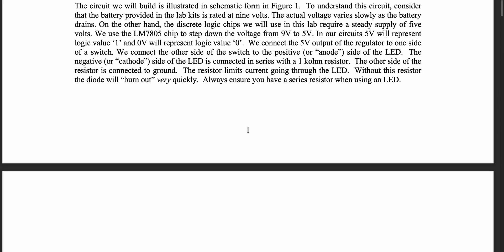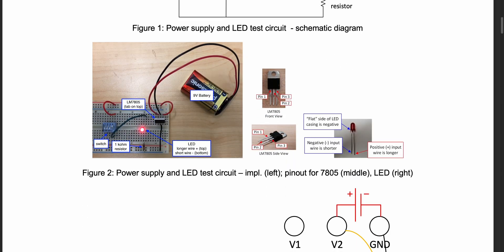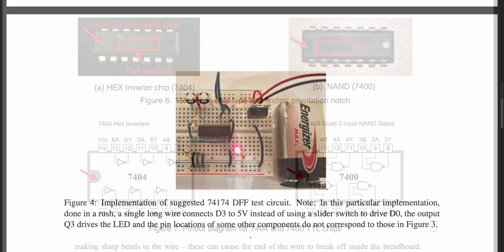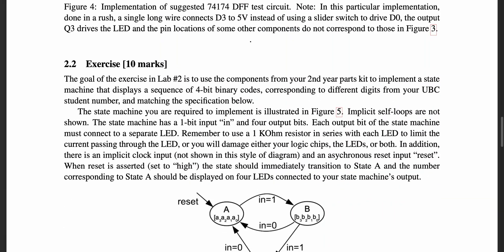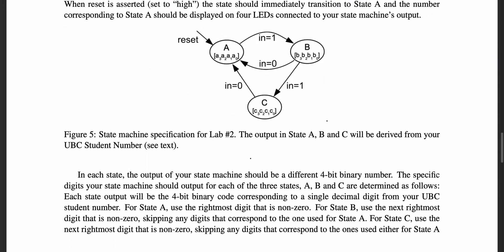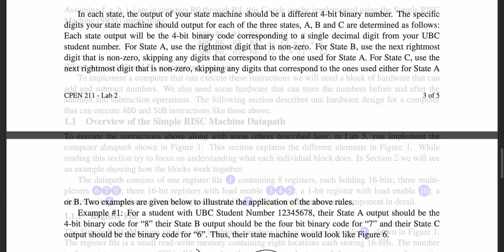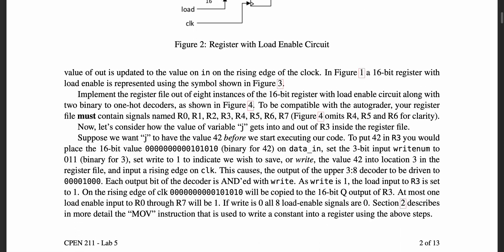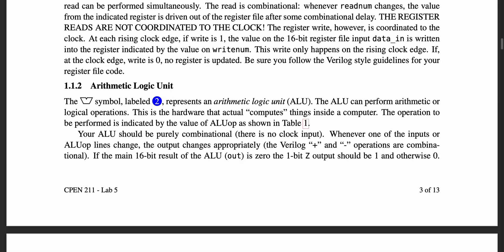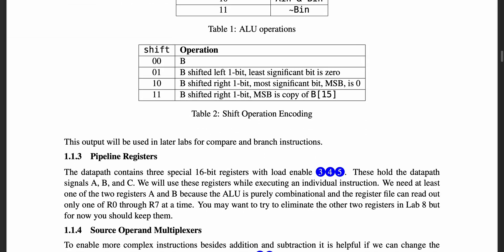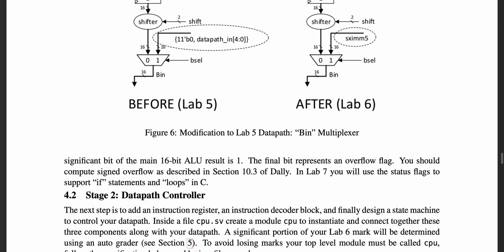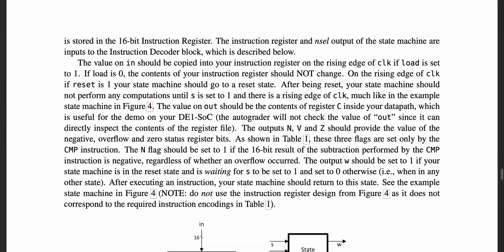Speaking of your labs, you will have seven weekly lab assignments in this course that emphasize gaining practice with the skills that you've been taught in class. Labs one and two are done individually and have a focus on building circuits, while labs three to seven may be done with a partner and have a heavy emphasis on programming. For these labs, you will work on them as homework and then go to your lab session to get them graded by a TA.